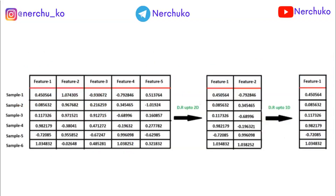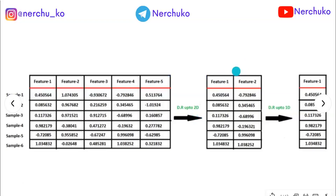Here you can see this dataset — it has 5 initial features. After dimensional reduction, if we consider 2 dimensions, we can convert those 5 features into 2 features in the dataset. We can also convert 2D data into 1D. That is basically what Dimensionality Reduction means.